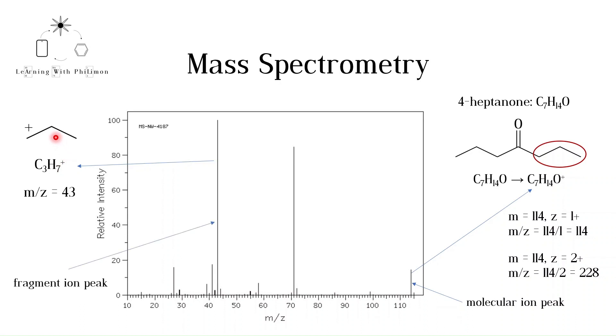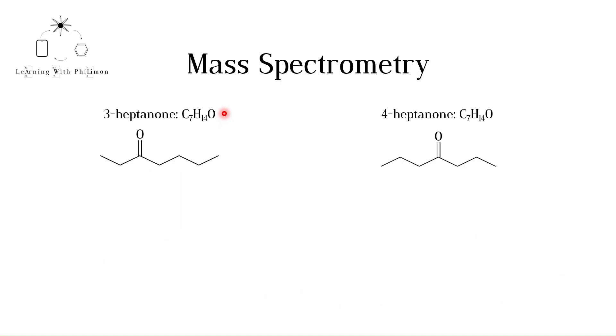These fragment-ion peaks are actually very useful in determining the structure of a compound. 3-heptanone and 4-heptanone are positional isomers. They have the same molecular formula. You would not be able to distinguish them from the molar mass or the functional groups present.